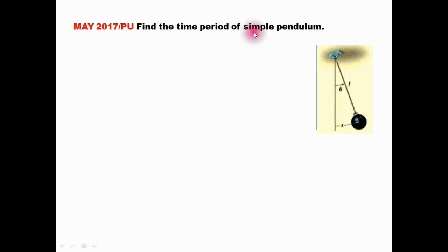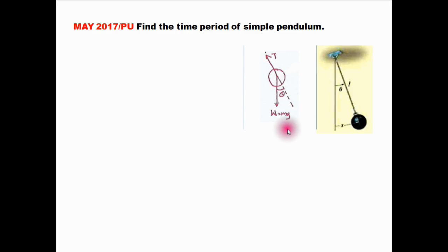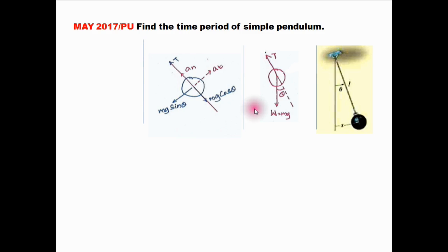Find the time period of simple pendulum. A ball of mass is hanging from the ceiling with the help of a string of length L. First draw the free body diagram. The weight is acting downward and tension is acting upward through the string. Now resolve this weight into along this tension and perpendicular to that — we get Mg cos theta and Mg sin theta.